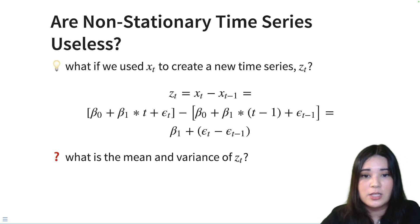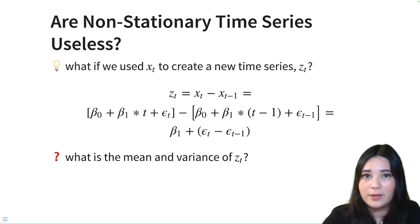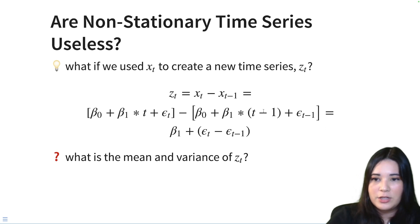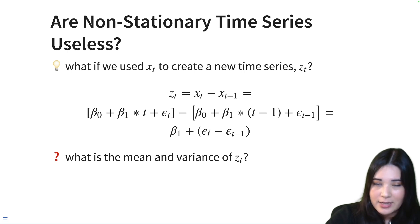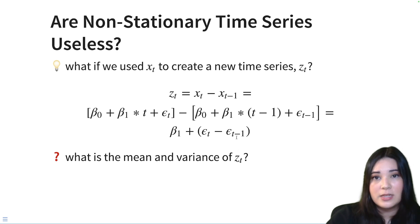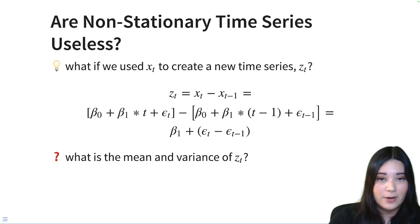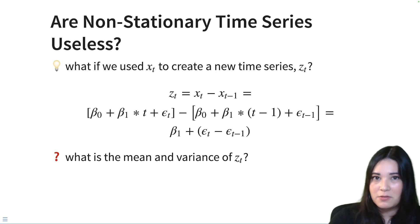For instance, let's say we created a time series called z(t), where every single entry is one of our observed values minus the value that came before it. In other words, we're creating a new time series by differencing each item with the item that came before it. If we plug in the formula that generated the time series, we get a middle equation, and if we simplify, we can see that z(t) is going to be our coefficient β₁ plus our error at time t minus our error at time t-1. This is a great practice for your random variable work — I highly recommend pausing and seeing if you can figure out the mean and variance of our new time series z(t).